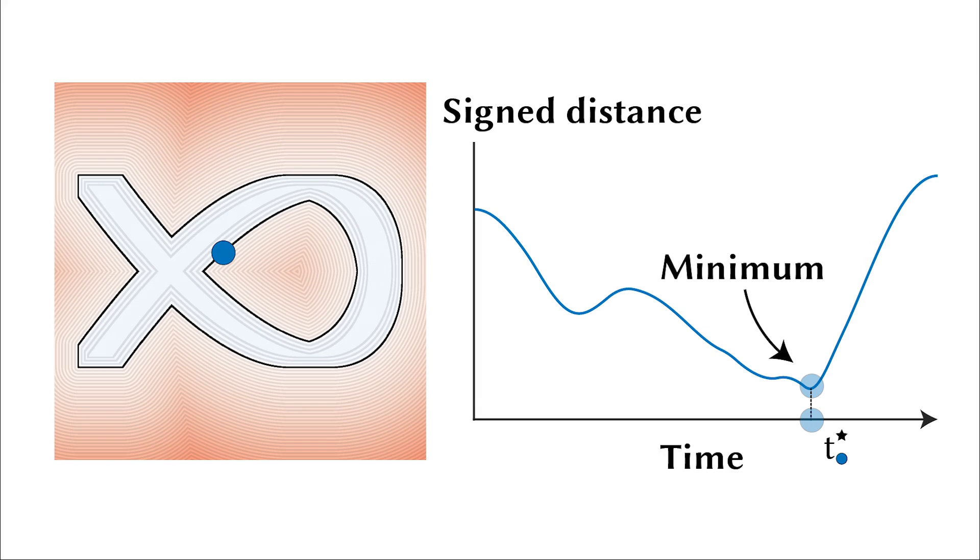Suppose somehow we have found the global optimum for a specific point on our spatial grid. Because of continuity, that point's neighbor's optimal value will be very similar.